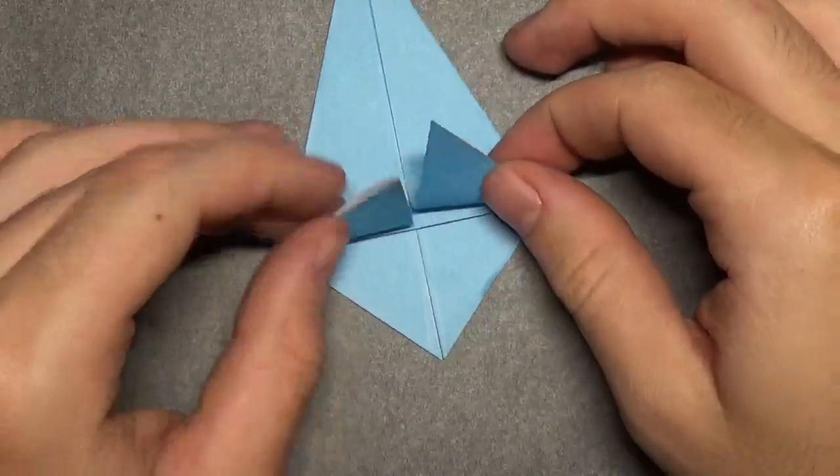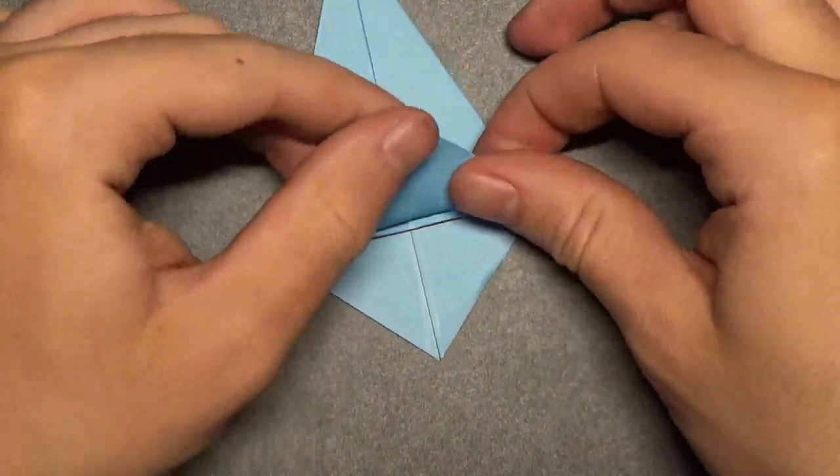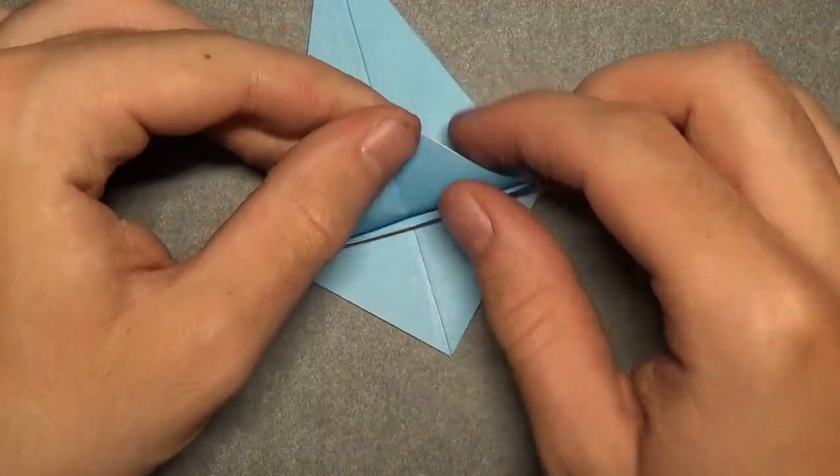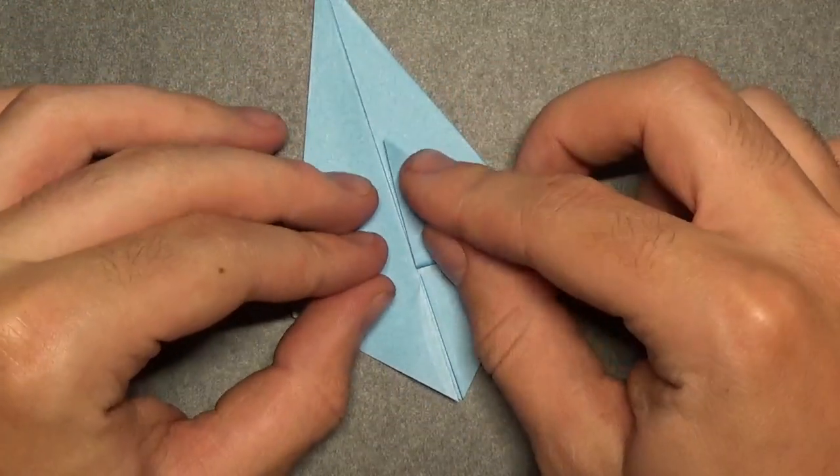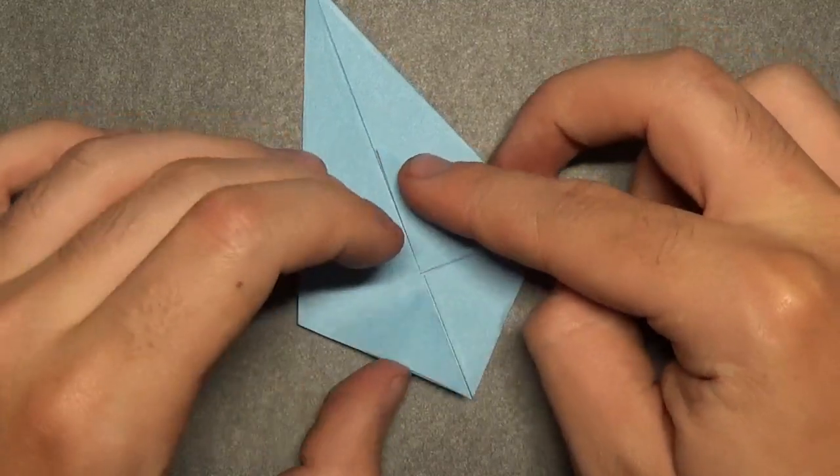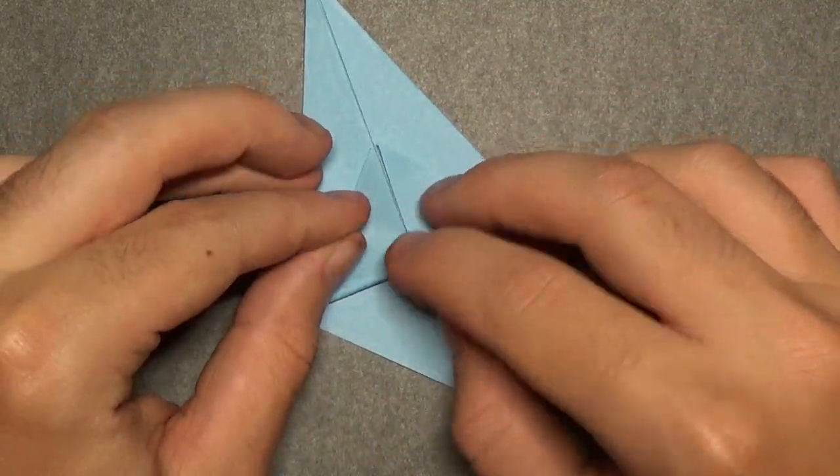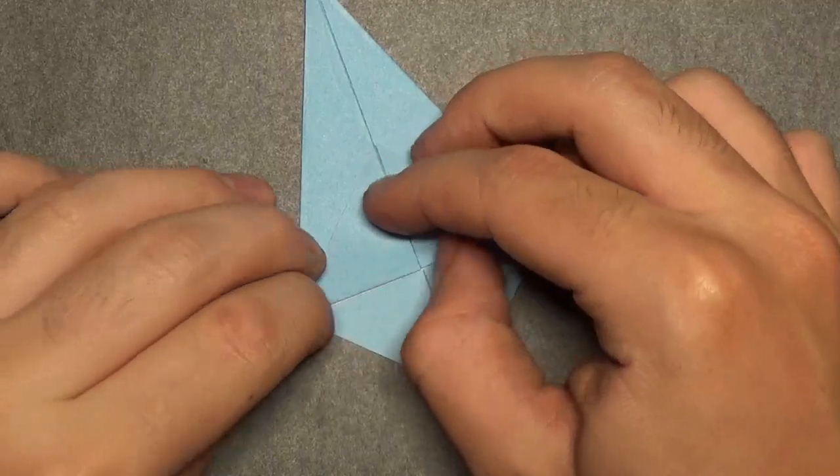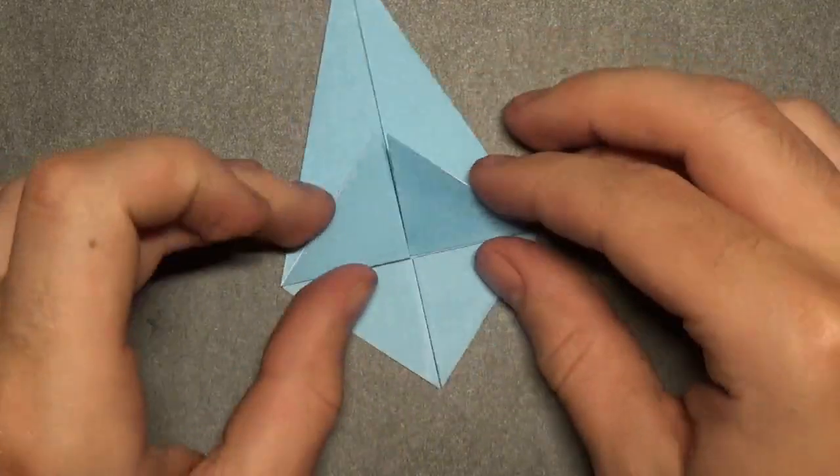And now, take these two flaps and fold them up, so the fold aligns with these edges here. Let's do one at a time. Okay. Unfold.